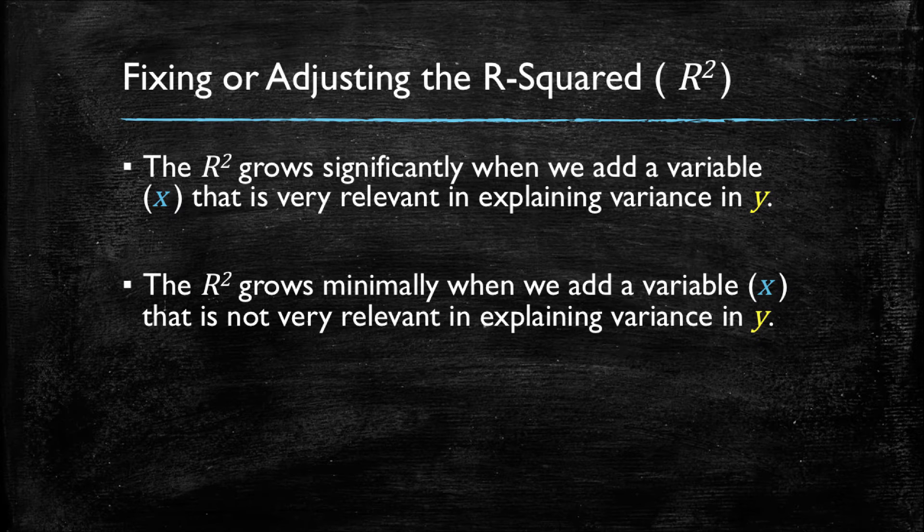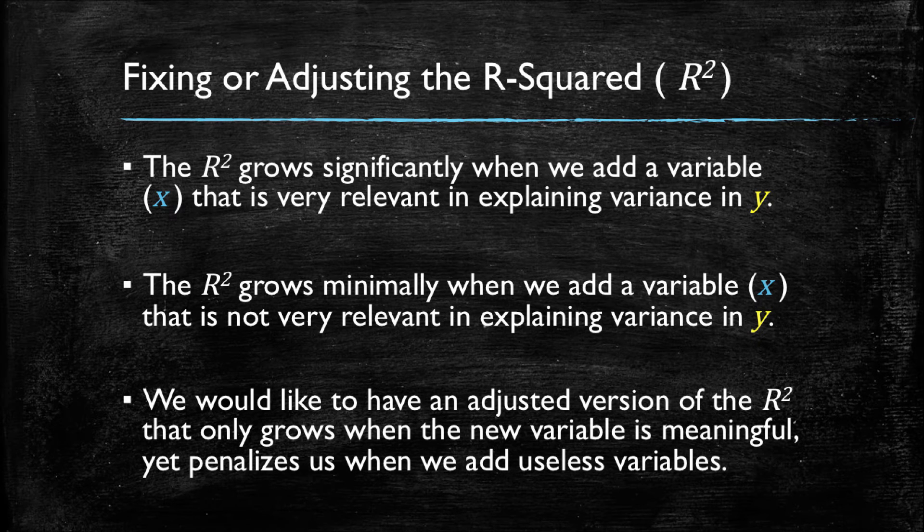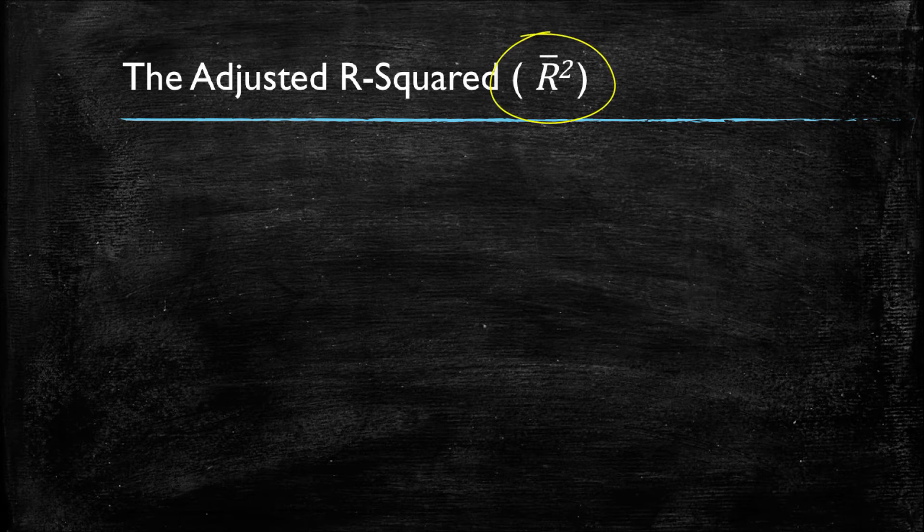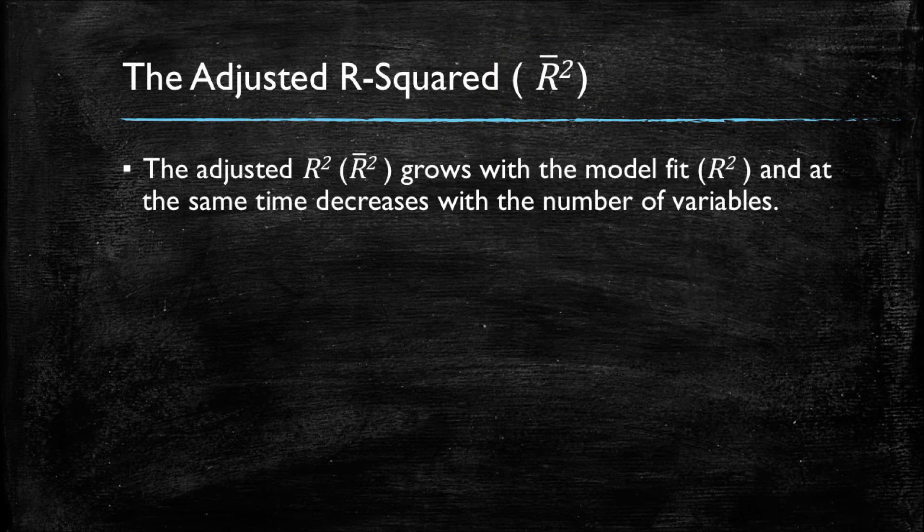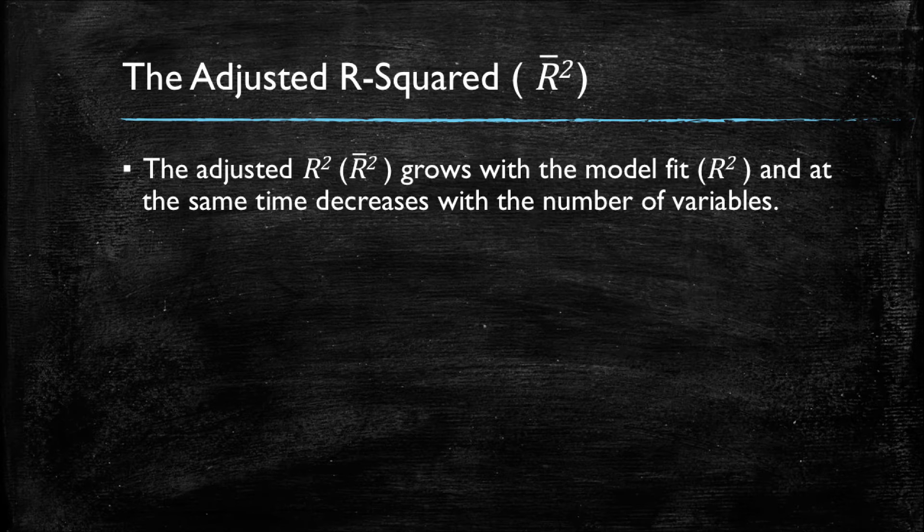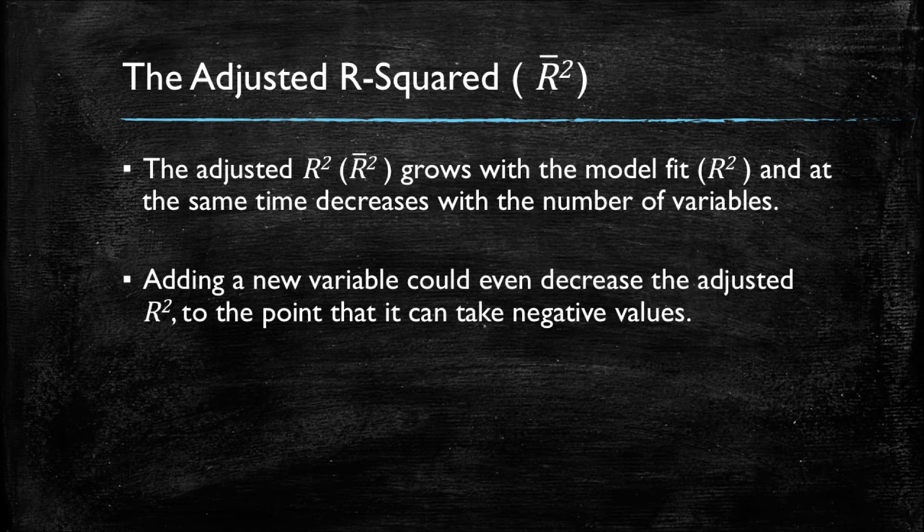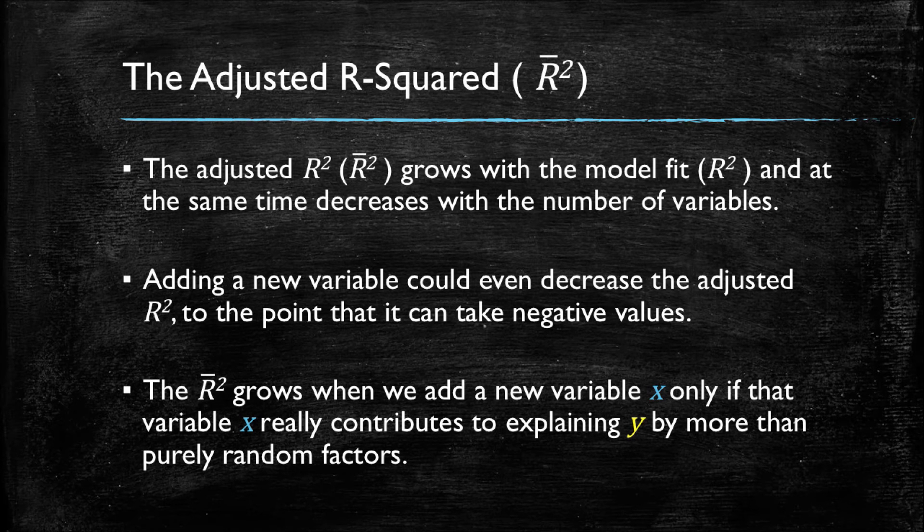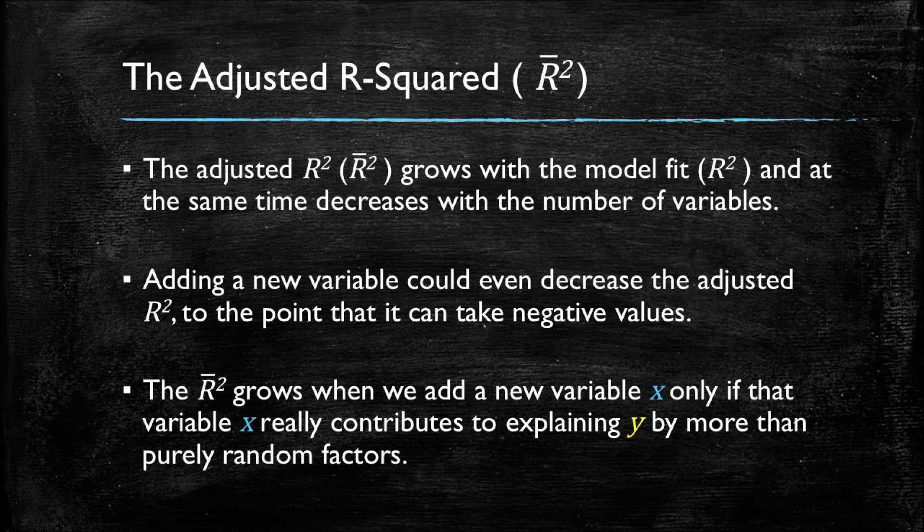So what we would like to have is an adjusted version of the r-squared that only grows when these new variables, these new x's, are really meaningful in explaining the variance in y. However, we would even like it to penalize us in the case we add useless variables. That is exactly the intuition behind the adjusted r-squared, which we generally denote as an r-squared with a bar on top. The adjusted r-squared is a metric that will grow with model fit, so it grows as r-squared grows. However, at the same time it decreases as the number of variables increases. So we can think of it as a function of both the r-squared and the number of variables in our models.